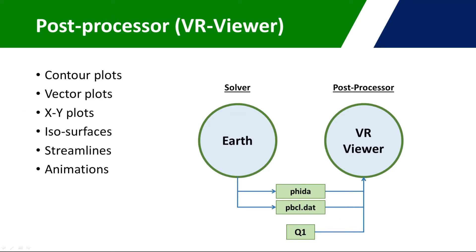The post-processor reads the files output from Earth and can display these in various ways. The post-processor is very similar in setup to the pre-processor, but provides viewing capabilities rather than editing ones. You can perform contour plots in any plane, with a full colour map, and with velocity vectors. You can generate standard XY plots, streamlines, and ISO surfaces. There is also a function to create and save animations of your results, if you have a transient simulation for example.